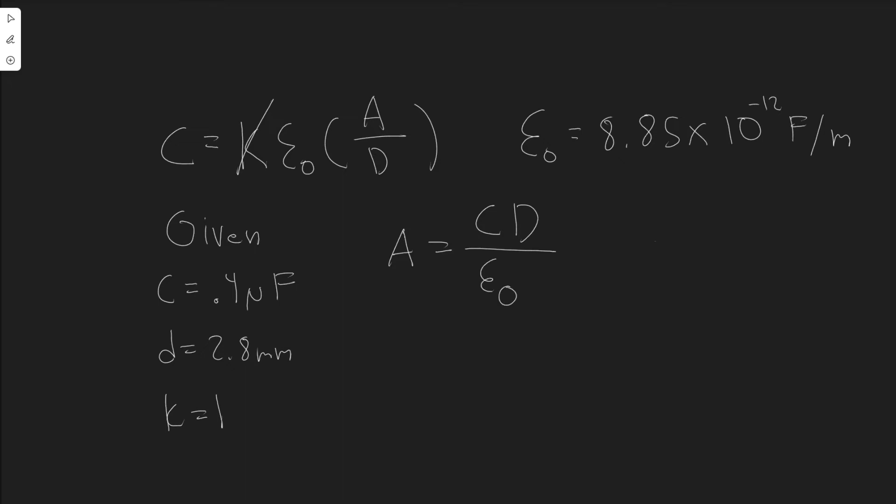And so keep in mind we want everything in standard units. So this capacitance is going to be equal to 0.4 microfarads. We want it in farads. So 0.4 times 10 to the minus 6, because it's micro. The distance we want in meters, because keep in mind the constant is written in meters. It's farads per meter. So 2.8 millimeters is equal to 2.8 times 10 to the minus 3 meters. So you're going to plug that in right here, 2.8 times 10 to the minus 3, and then divide by epsilon naught. So just write this constant here. It's 8.85 times 10 to the minus 12.